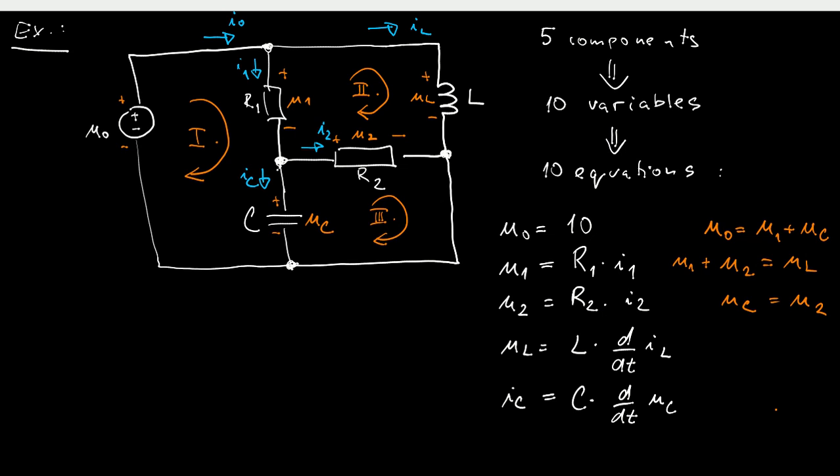And finally, the Kirchhoff's current law. We have actually three nodes here. One, two and three. However, we can discard this third node as redundant. So, we only need actually two more equations. We will write down the equations corresponding to the node number one and two. And these two equations are i0 is equal to i1 plus iL, and finally, i1 is equal to iC plus i2. And that's it.